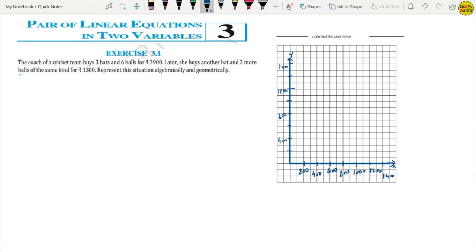Now come to question number 2. What is question number 2? It is the same as 1st kind. The coach of a cricket team buys 3 bats and 6 balls. So, let 1 bat equals to Rs. x, 1 ball equals to Rs. y.